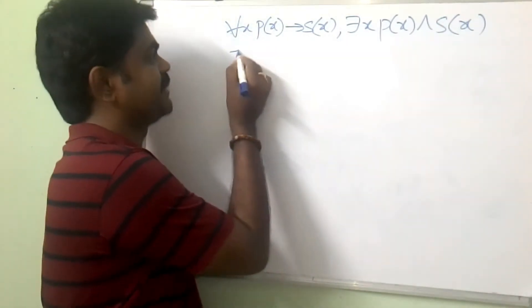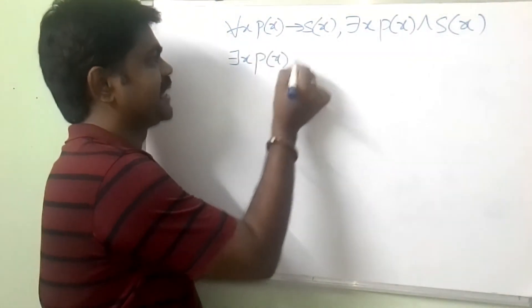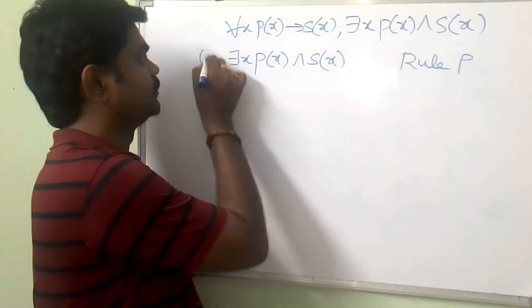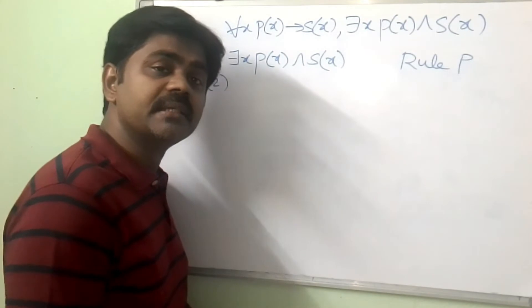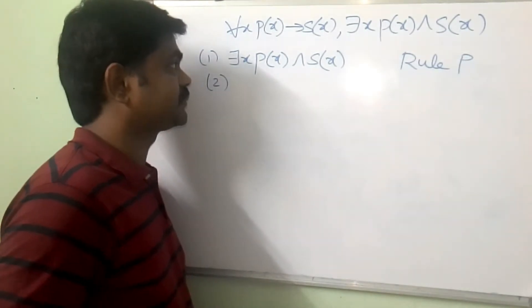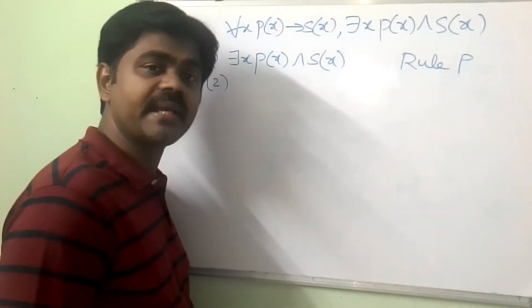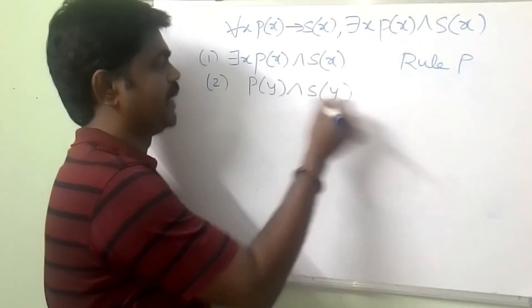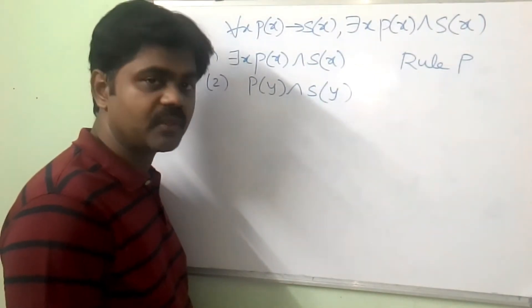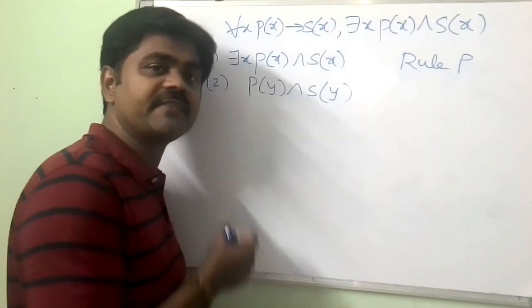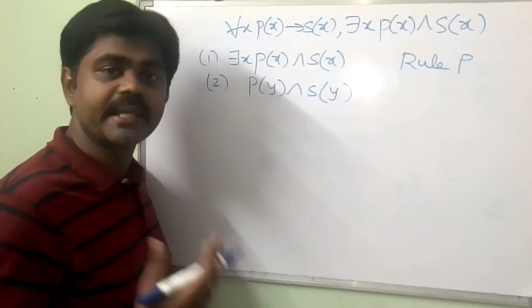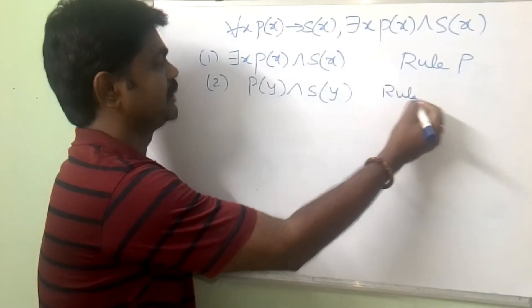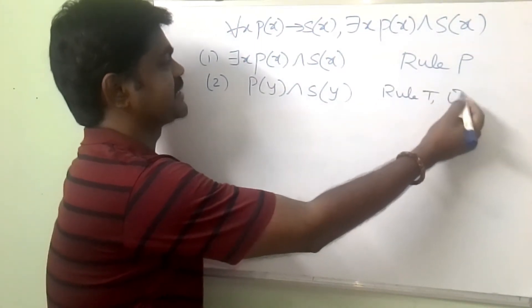Let me take the premise. First I am taking: there exists X, P of X and S of X. This is already given, so this is step 1. And step 2 is existential specification — from that I will get P of Y and S of Y. What is existential specification? If I have there exists A of X, we can conclude A of Y.